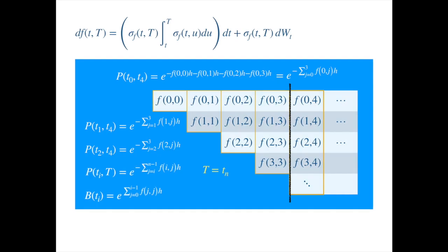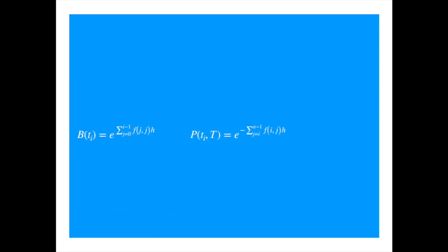Now we are ready to derive the HJM drift under the risk neutral measure. We know that the price of any asset, expressed in the units of the bank account, is a martingale under the risk neutral measure.